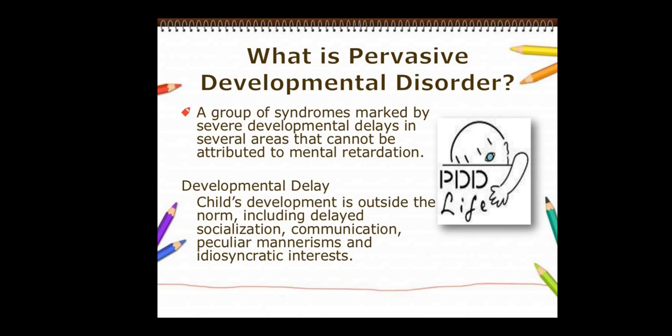The child will behave strangely. In pervasive developmental disorder, the children will have some areas of deficiency or difficulty — like social skill, communication skill, behavior, and personality.